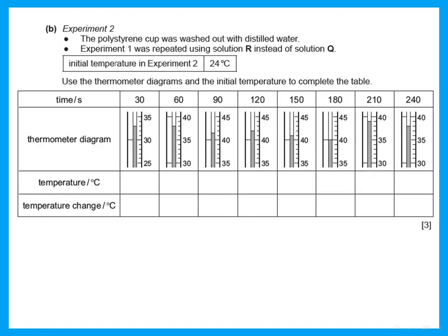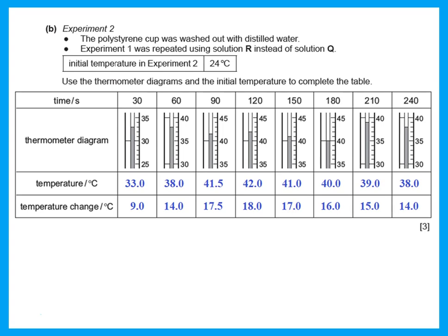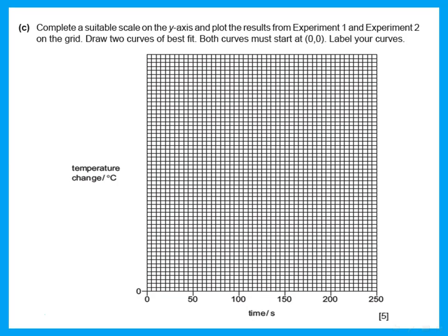In experiment two, the polystyrene cup was washed out with distilled water and the experiment was repeated using solution R instead of Q. In this experiment the initial temperature is 24°C. Again we read the temperatures from the thermometer and subtract those numbers minus 24°C to get the temperature changes.